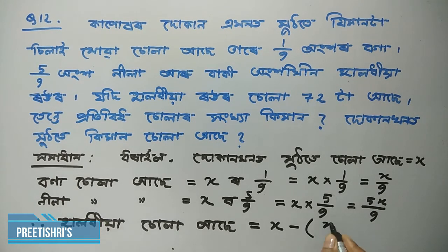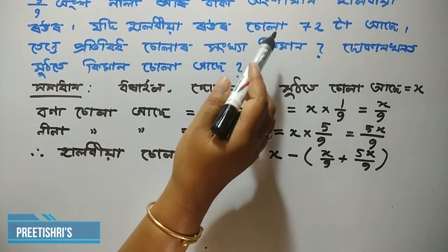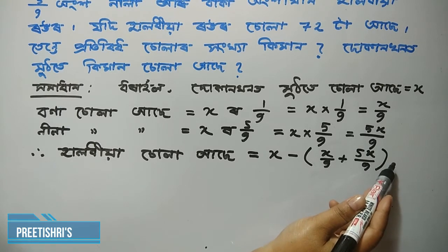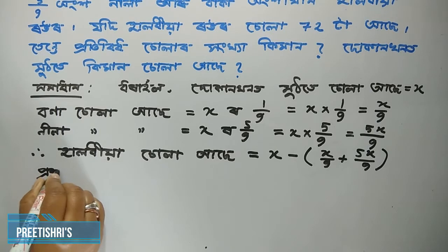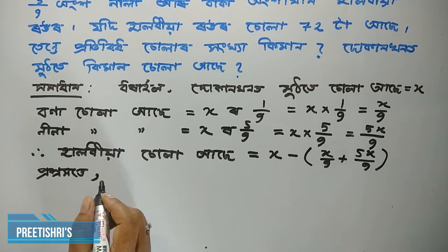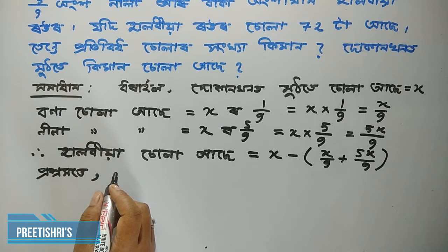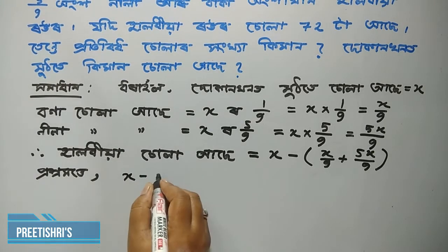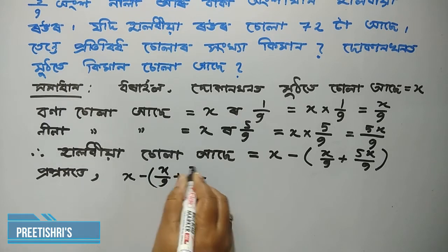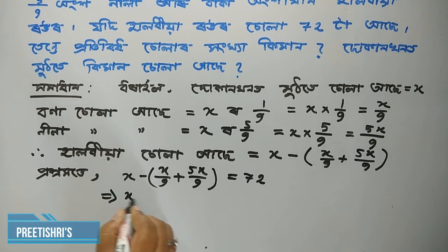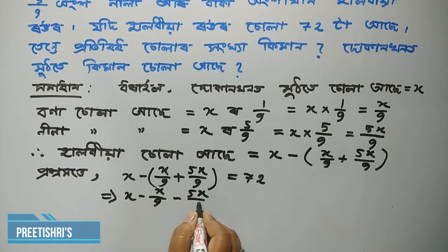Halo diasular hoin khatu paijam. Prosnam mote aama — X minus X by 9 plus 5X divided by 9. Ethu homan kimanhabo, bahkhottota halo diasular ase, likha prosnam mote. X minus X by 9 plus 5X divided by 9 equal to kiman 72.